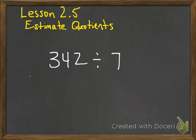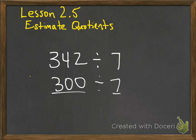If you take a look at 342 divided by 7, we know when we estimate that there's some rounding involved before we solve the problem. But the problem is, if we decided to round this to 300, like we would do if we were multiplying, and divided that by 7, we're not going to be able to get an answer that goes in evenly.